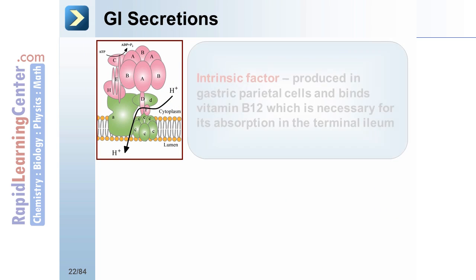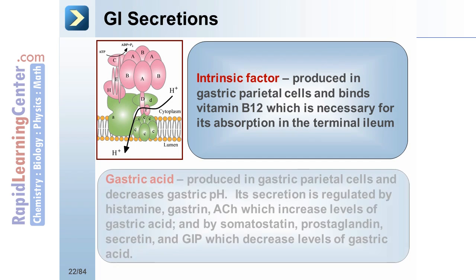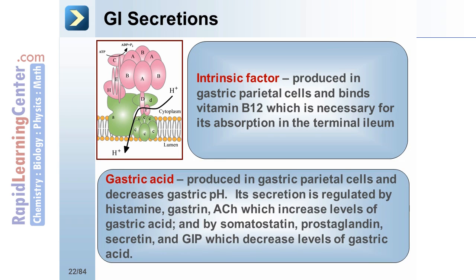There are also GI secretions of note. Intrinsic factor, produced in gastric parietal cells, binds vitamin B12, which is necessary for its absorption in the terminal ileum. Gastric acid is produced in gastric parietal cells and decreases gastric pH. Its secretion is increased by histamine, gastrin, and acetylcholine, and decreased by somatostatin, prostaglandin, secretin, and GIP.